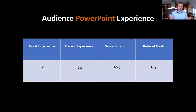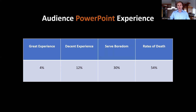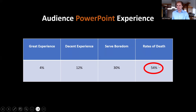Often when people show a table in PowerPoint, they have everything in the same colour and they often have a lot of numbers, a lot of percentages, and this presents a problem — because the audience doesn't know where to look. But have no fear. You can direct their attention by simply using colour to highlight the key piece of information. For instance, in this case, if I want you to look at the rates of death by PowerPoint experience, I can circle it in red — 54% — and your eye immediately goes there, forgetting about the severe boredom, the decent experience, and the great experience, because I am now directing your attention.